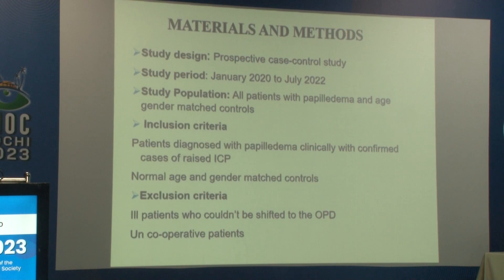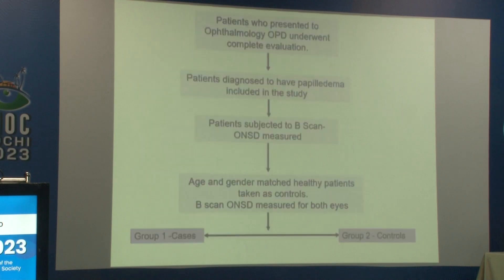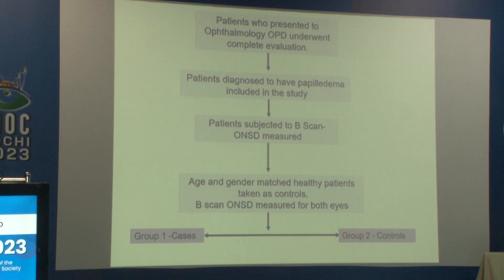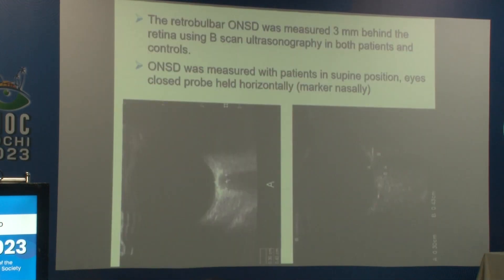Patients who could not be shifted to OPD and uncooperative patients were excluded. Patients diagnosed with papilledema underwent complete evaluation and B-scan ONSD measurement. Similar age- and gender-matched controls also underwent B-scan ONSD measurement. Participants were divided into Group 1 (cases) and Group 2 (controls). Retrobulbar ONSD was measured 3 mm behind the globe using B-scan ultrasonography, with the probe held horizontally and patients in supine position.